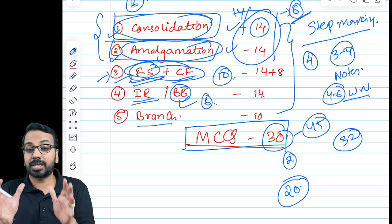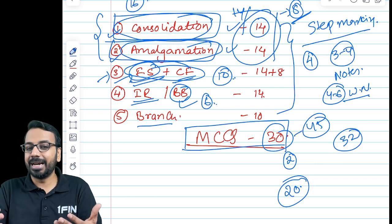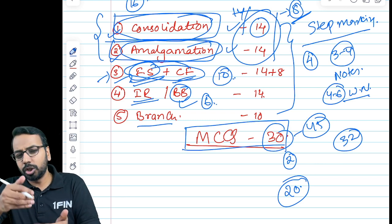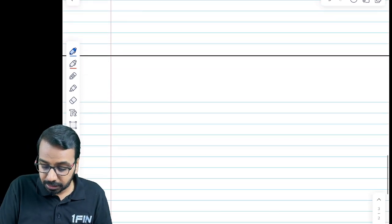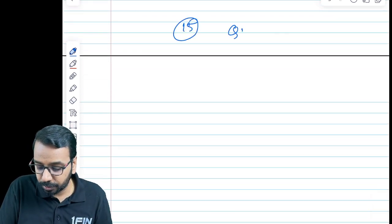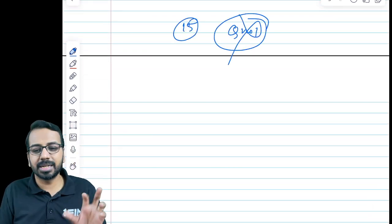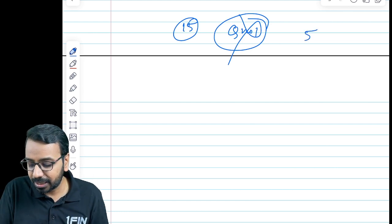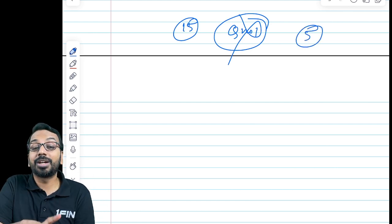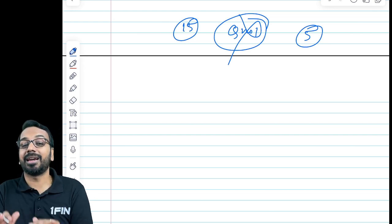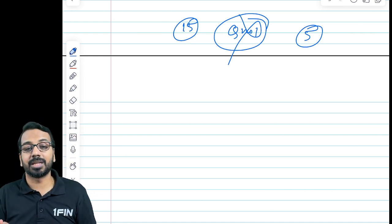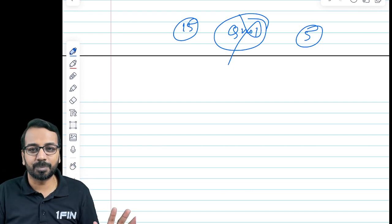So this should be a strategy. If at all you are scared with consolidation, amalgamation, do it towards the end. And while reading the question, the first 15 minutes, don't read question number one because it is anyway a compulsory question. So don't read that. Read the remaining five questions without reading the amounts, and figure out which question are you comfortable with. Start with your best question.